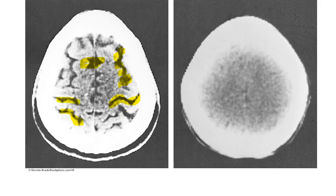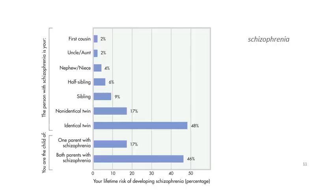Schizophrenic brains have larger spaces within the neurons, and researchers believe this plays a significant role. Regarding genetics, in identical twins, if one develops schizophrenia there is a 48% likelihood that the other identical twin will also develop it. However, for fraternal twins, the risk factor drops to only 17%.